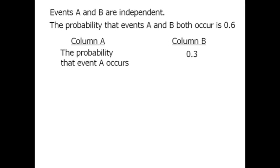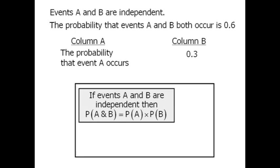Alright, to solve this question we'll use the following rule. It says if two events are independent, then the probability that both events occur will be equal to the product of each probability.